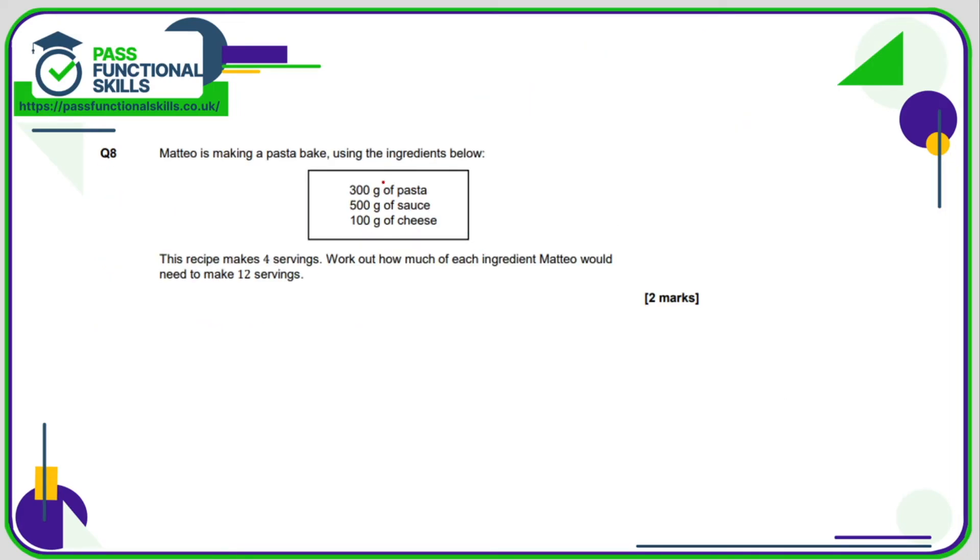Question eight: we can use a calculator for this as well. This recipe is for four people, so if Matteo is making 12, he's going to need to triple this. He's going to need three times 300 pasta, three times 500 sauce, and three times 100 cheese. We can probably do most of this without using a calculator: 900 grams of pasta, 1500 grams of sauce, and 300 grams of cheese.